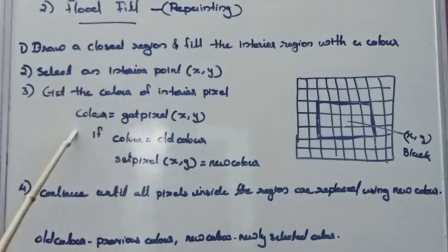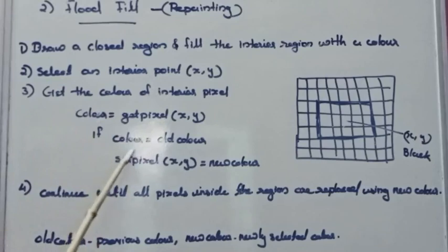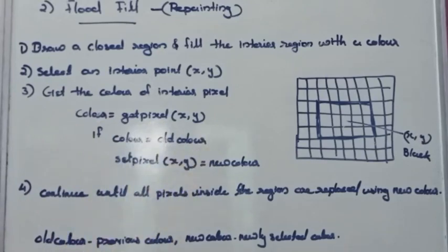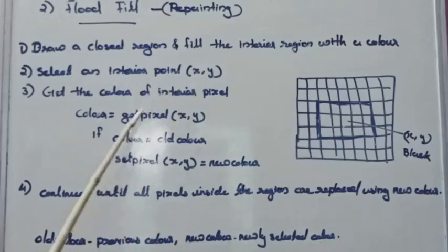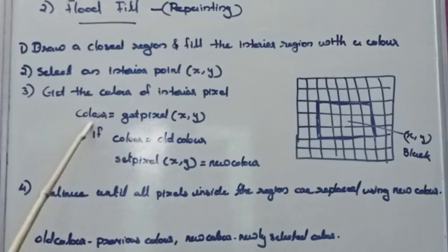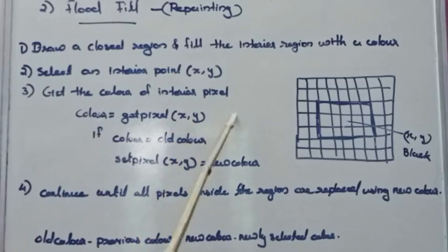Now I will check this color. This color is the previous color — you can say it is already filled. This previous color is the old color. The new color is the newly selected color. Now this color is the variable. I choose the previous color.